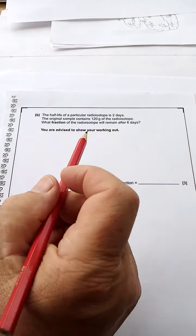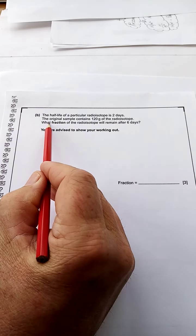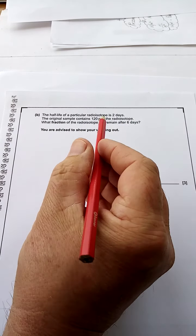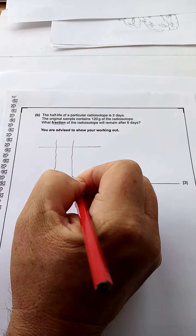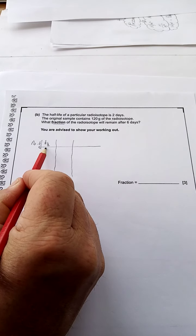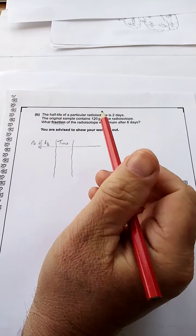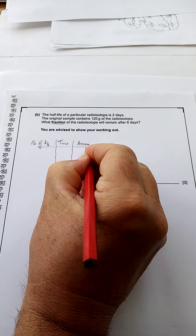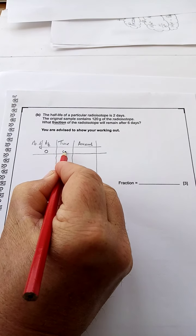It says the half-life of a particular radioisotope is two days. The original sample contains 120 grams of the radioisotope. What fraction of the radioisotope will remain after six days? Well, this is what fraction remains, so we'll build a table. And we'll put number of half-lives, see the way I've done T subscript half there, and we'll put time. The 120 really is a red herring, it really has nothing to do with it, but we'll put in the amount anyway. It really has nothing to do with the question, and you'll see why in a minute.